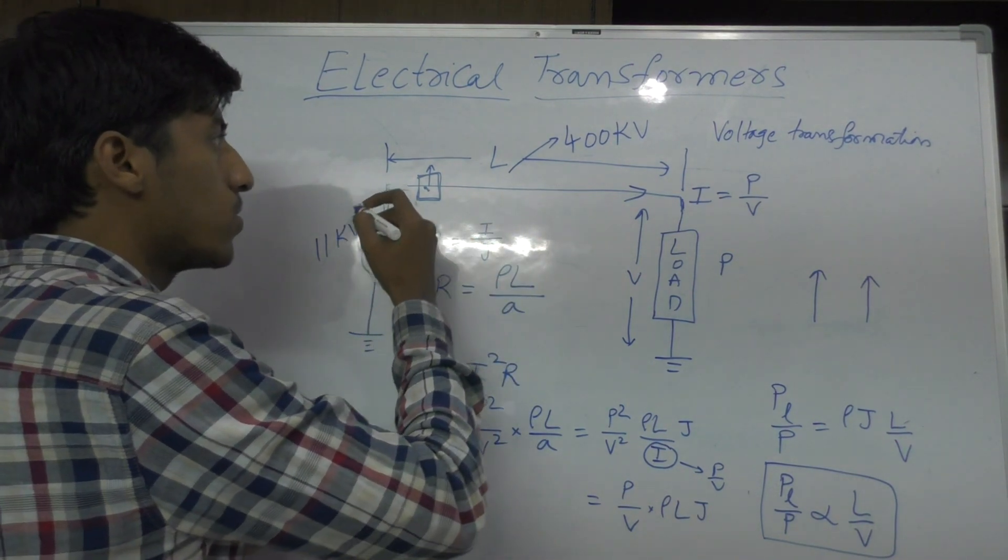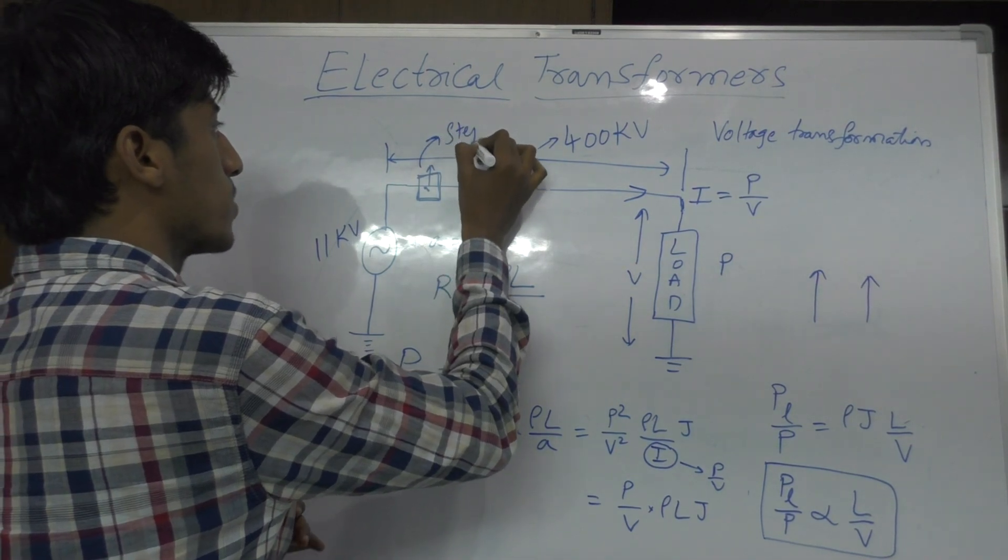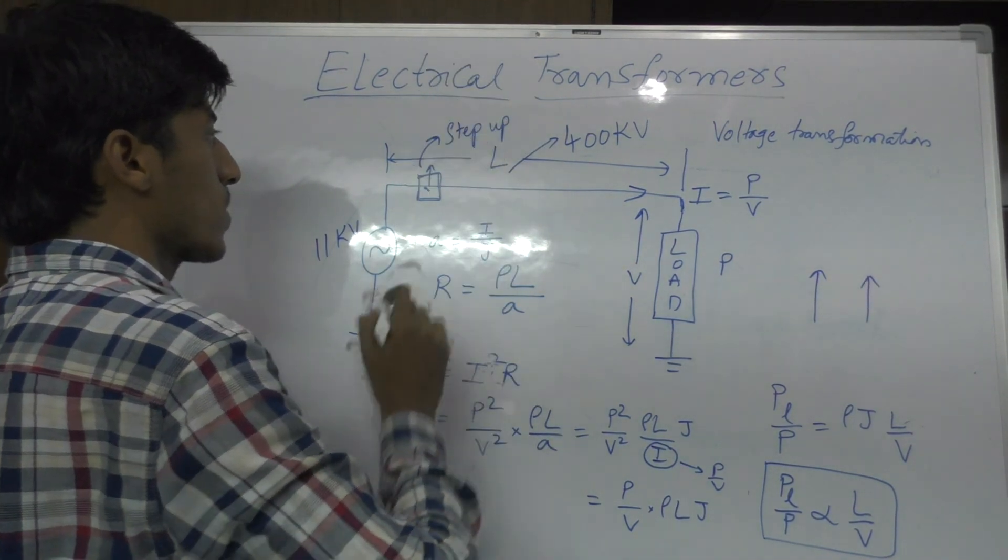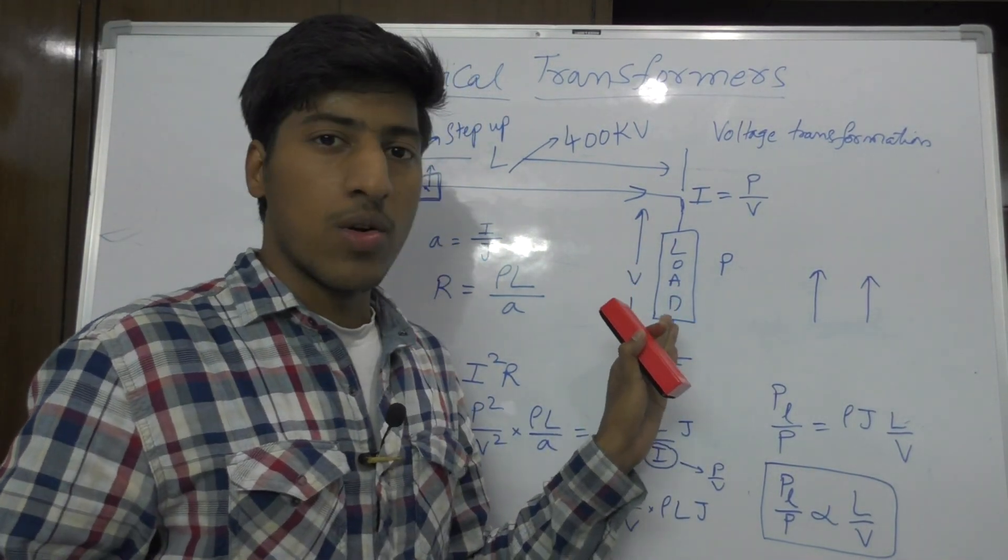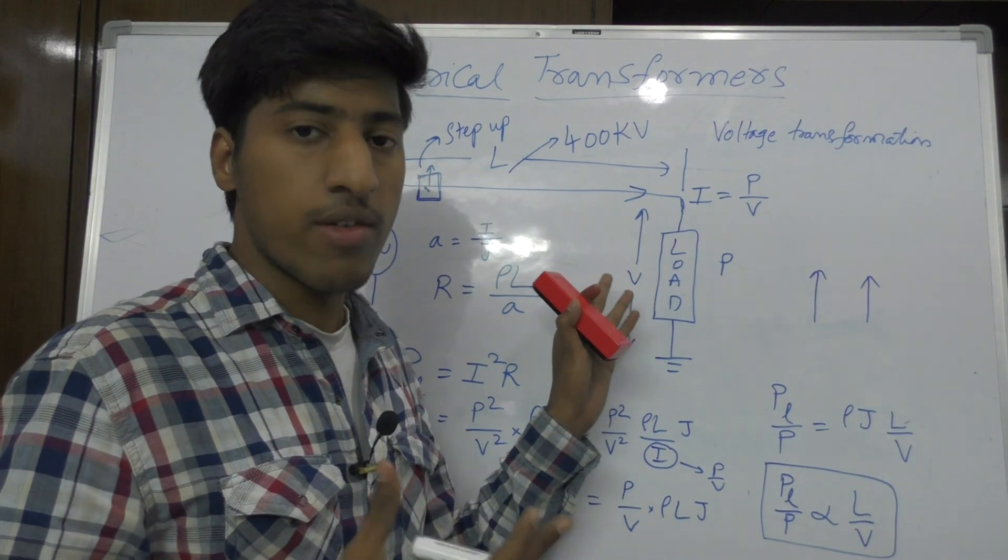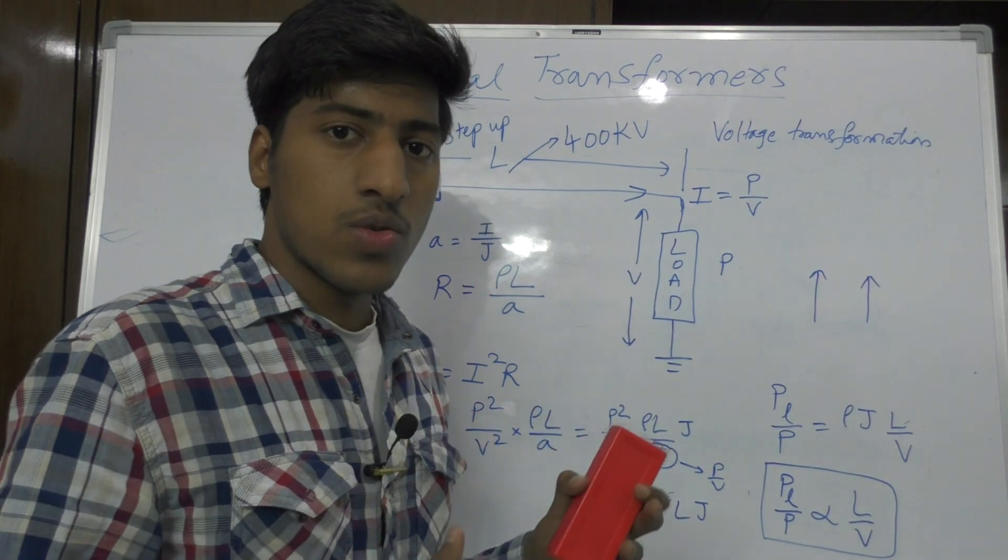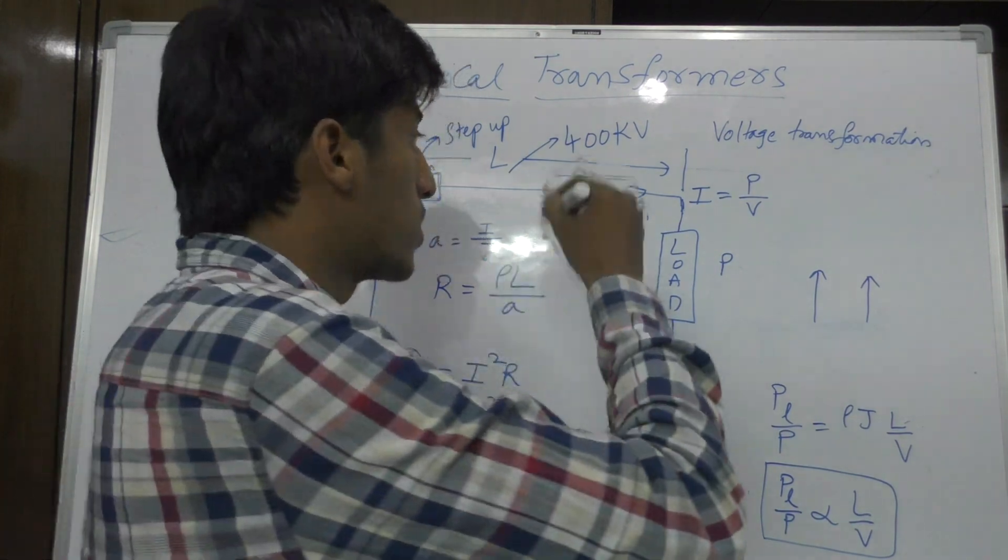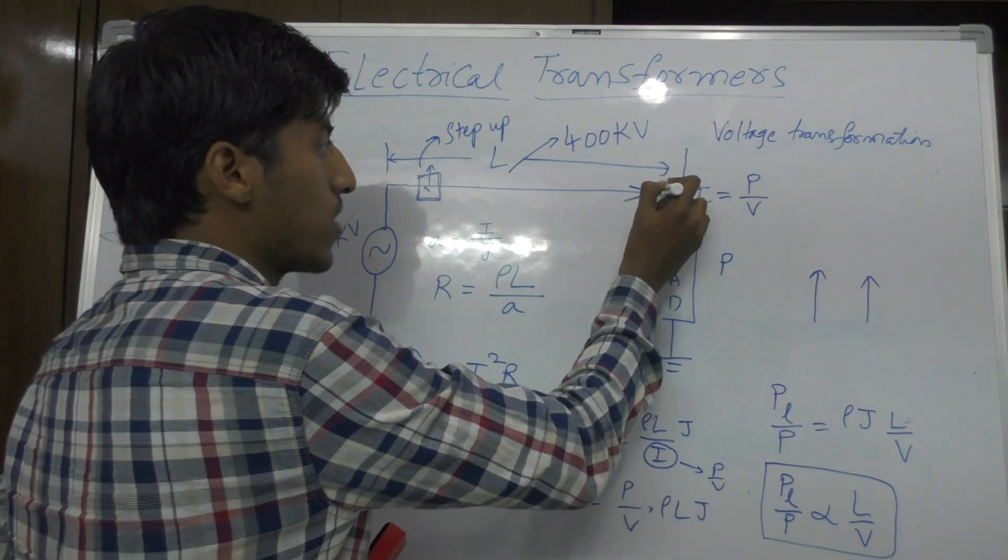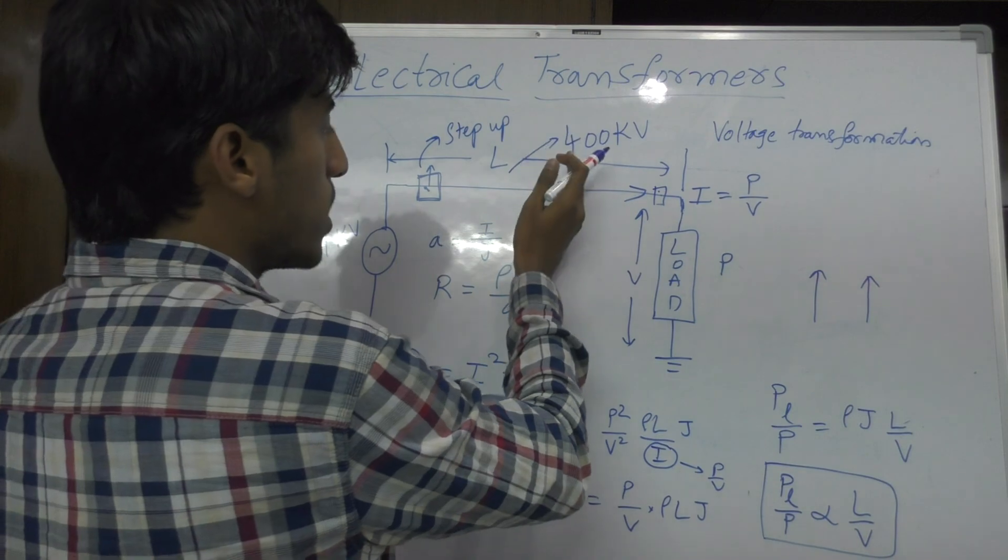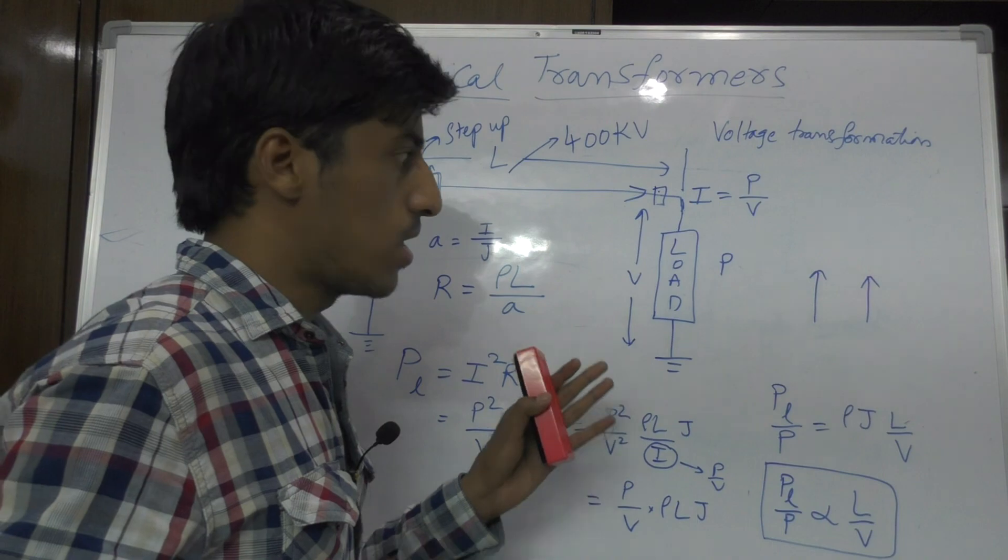And now loads at this load point, loads cannot withstand this high amount of voltage, high value of voltage. So this voltage should be further reduced to smaller values. So here also there is a necessity of installing a transformer. And this transformer decreases the voltage level from 400 kV to the required voltage, lesser value of voltage. And this transformer we will call it as step-down transformer.